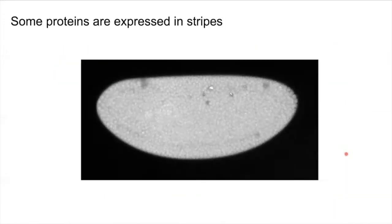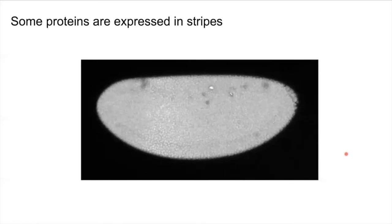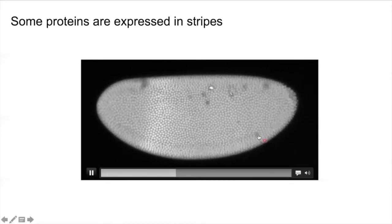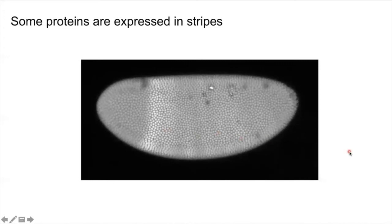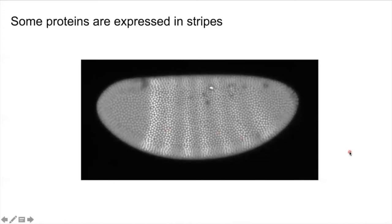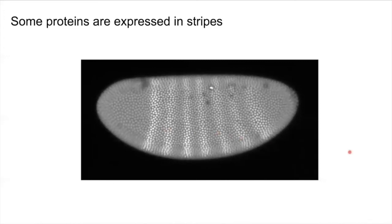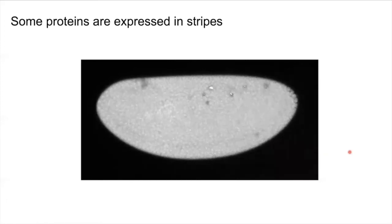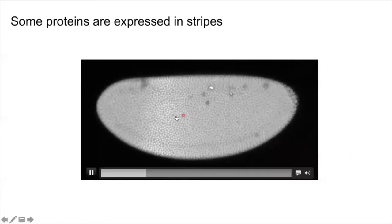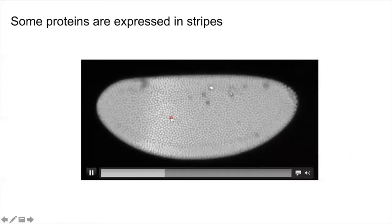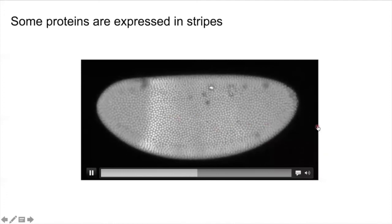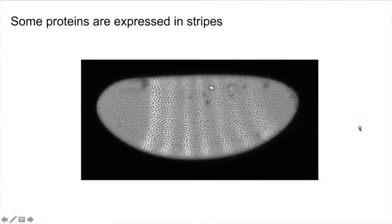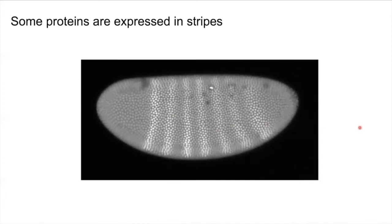Here's another fluorescence movie created by the confocal microscope. All the little spots that you see are nuclei. Different nuclei contain different types of proteins. The stripes that you see that form across the embryo is a specific type of protein that serves to pattern the embryo.